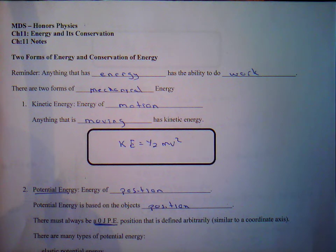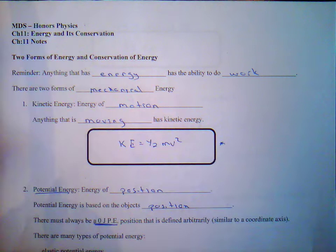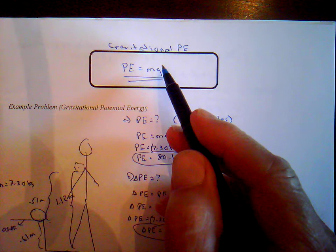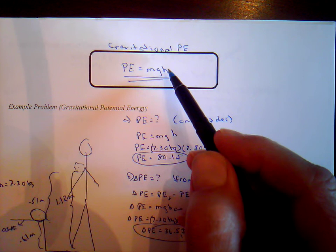We're going to continue our understanding of kinetic energy, potential energy, and how they're related. Some important things to remember: the equation for kinetic energy represents the energy of motion — anything that's moving has kinetic energy. We also have the equation for gravitational potential energy, which is energy of position, related to the object's height above some reference point, usually the ground.